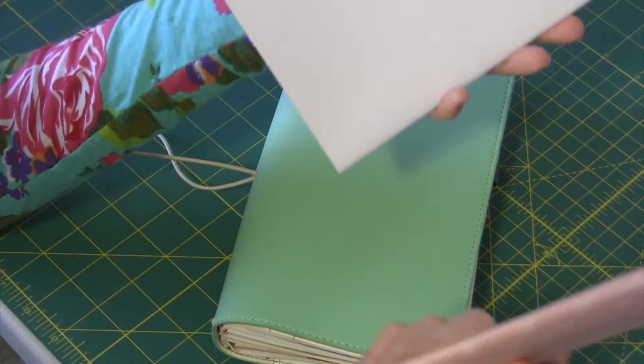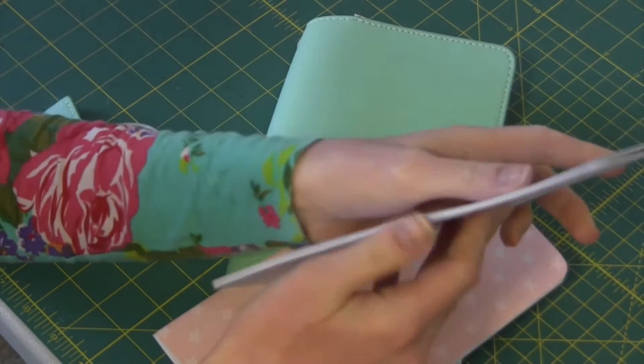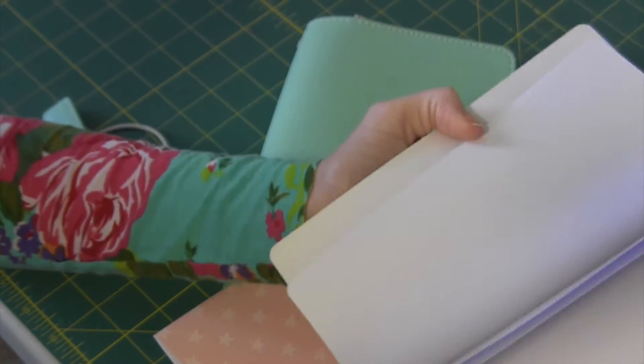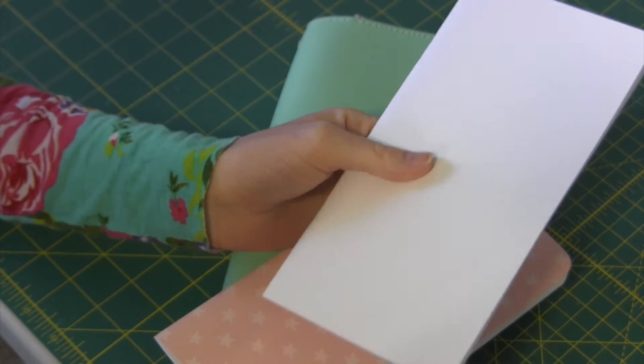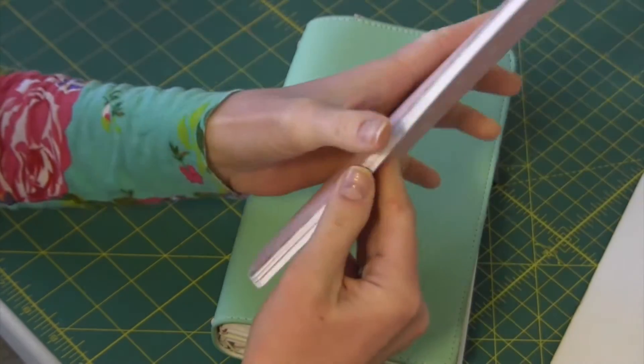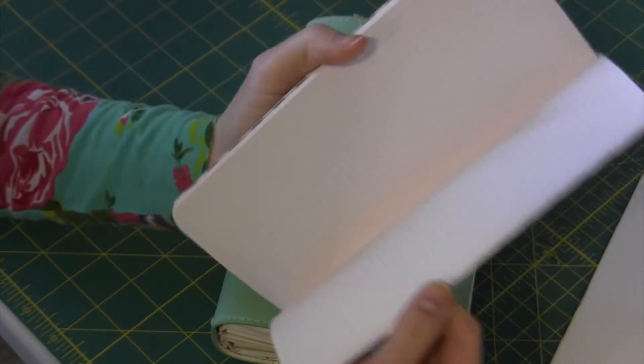I still have two other books and if I wanted to I could put these in as well. This right here is just a plain notebook from Michael's, their recollections line when they had like a pseudo traveler's notebook and this one is also from Webster's Pages. It's a grid notebook.